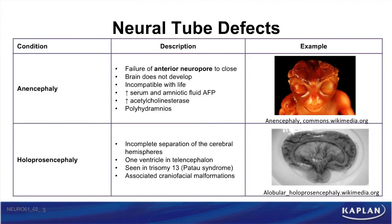With this brief overview of nervous system embryology, let's discuss the congenital abnormalities that you will need to be familiar with on the test. The first two are forebrain anomalies: anencephaly and holoprosencephaly. Anencephaly occurs when the rostral neuropore fails to close.